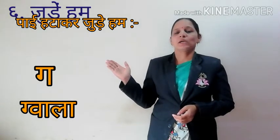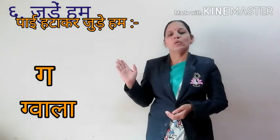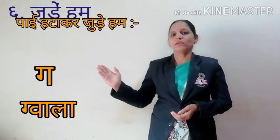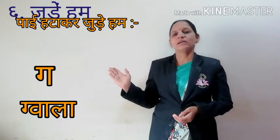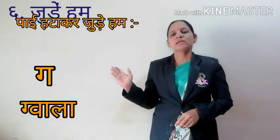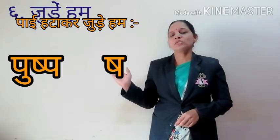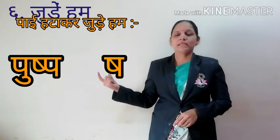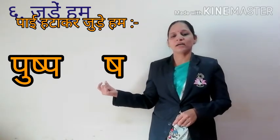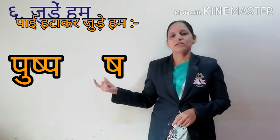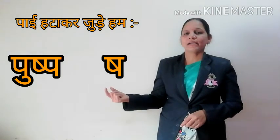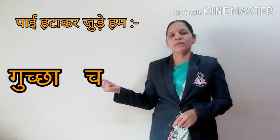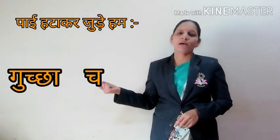पहला शब्द है गौाला। देखो यहाँ पर ग की पाई हटाई गई है। यहाँ पर ग जो गौाला शब्द बना है, उसकी पाई हटाकर गौाला शब्द बनाया गया है। दूसरा शब्द है पुष्प। पुष्प में कौन से अक्षर की पाई हटाई गई है? श की। इस पुष्प शब्द में जो श है उसकी पाई हटाकर प को जोड़ा गया है, यानि शब्द हुआ पुष्प। आगे है गुच्छा। इस शब्द में च की पाई हटाई गई है, तो जोड़ शब्द बना हमारा गुच्छा।